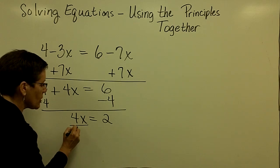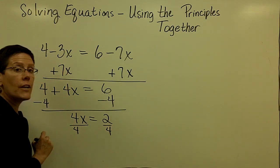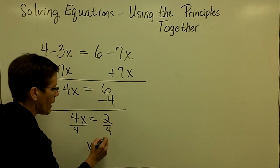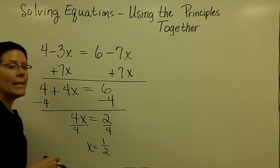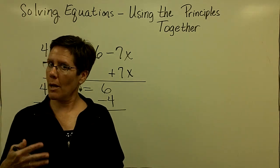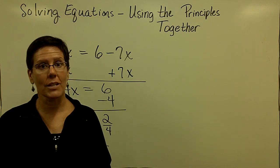I hope you notice that I've been using the addition principle, or here I subtracted, which is adding a negative number. I use the addition principle first. I never turn to dividing until the very end. So I'm going to divide both sides by 4 to get x alone. 2 divided by 4 can be reduced to be 1 half. And again, I should check this. I'm going to pause here, and we're going to involve some parentheses as we get ready to solve further equations.